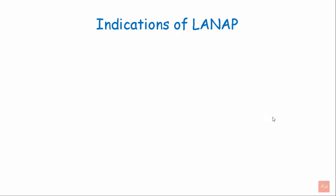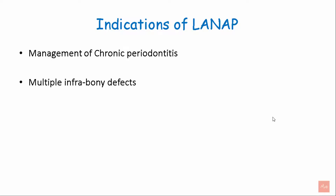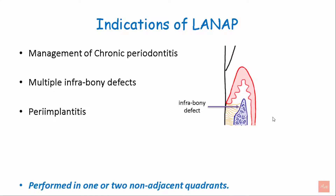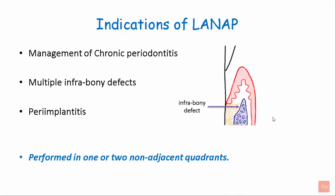LENAP is indicated for treatment of chronic periodontitis, in cases of multiple infrabony defects, and in cases of peri-implantitis. It is noted that LENAP can either be performed as a single-step procedure or can be done in multiple appointments. When done in multiple appointments, it is advised to perform in one or two non-adjacent quadrants.